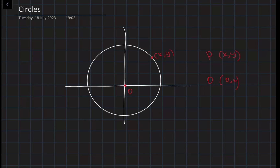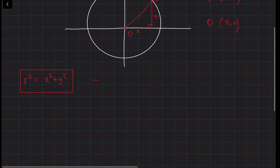Using the Pythagorean theorem, we can actually find the equation of a circle. What we need is the radius. We construct a right-angled triangle where one leg is x and the other is y. So the radius squared equals x squared plus y squared. The most basic equation of a circle is r² = x² + y², but this is when the center is at (0, 0).